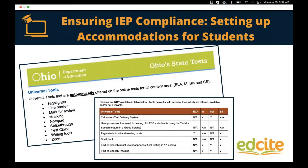To ground us in the types of tools that students should have access to on assessments, I wanted to share a few screenshots from a sample of different states and how they provide universal tools to students. In this first example, we have information put out by the Ohio Department of Education. They talk through universal tools — these are tools available to students on every test, regardless of their IEP or any designated supports.